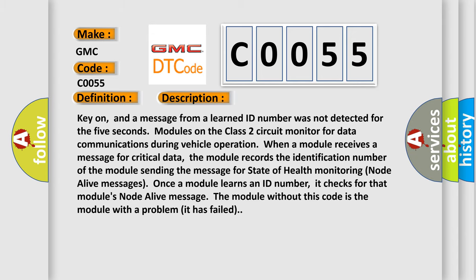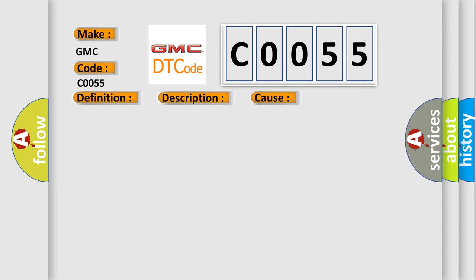This diagnostic error occurs most often in these cases: VIU Class 2 circuit is open, shorted to ground or to B+. VIU ignition power circuit has a high resistance condition. VIU main ground circuits has a high resistance condition. VIU module may have failed and is pulling the circuit low.